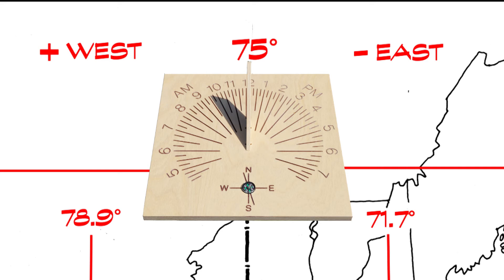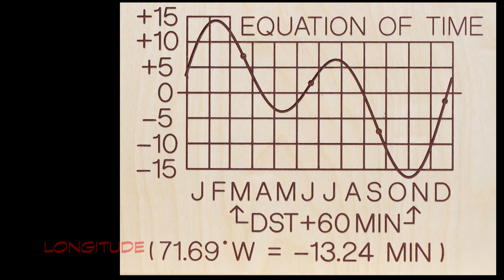To summarize, the rule for standard time conversion is: if you are east of the time zone's meridian, subtract the value for the longitude. West of the meridian, add it.